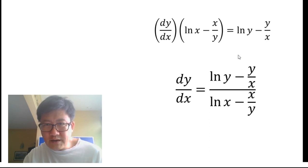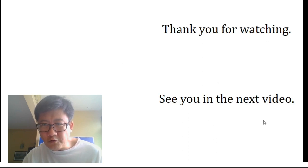What we have to do at the end is just bring this down, tidy things up, and we have our answer here: dy/dx equals (natural log of y minus y over x) divided by (natural log of x minus x over y). This is our answer for the question. Thank you for watching, and see you in the next video.